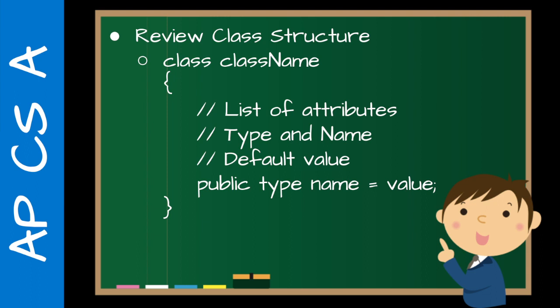First, I would just review the class structure — class, class name, list of attributes. Basically it's public, data type, name, equals, and the default value. Again, they should be used to this. Hopefully you've been doing this all along in the various units, and just kind of reinforcing this idea as we go along.